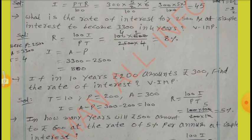If in 10 years Rs.200 amounts to Rs.300, find the rate of interest. Here, T equal to 10, P equal to 200, A equal to 300. The greater value is A and the smaller value is P. First, find I: I equal to A minus P, 300 minus 200 equal to 100. Therefore, R equal to 100 into I by PT. By simplification, we get R equal to 5%.